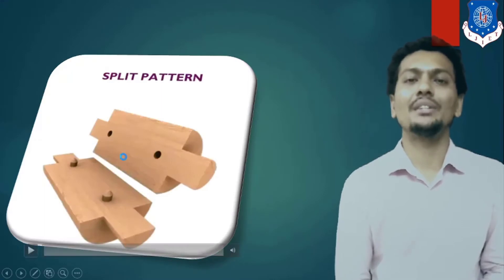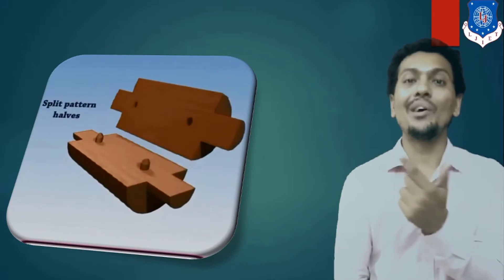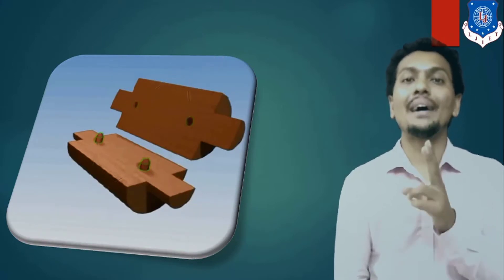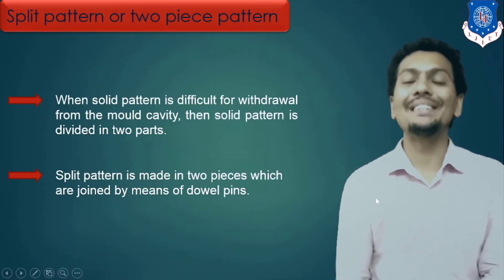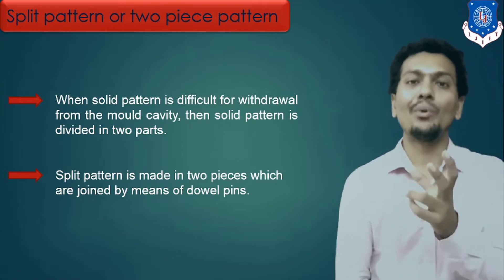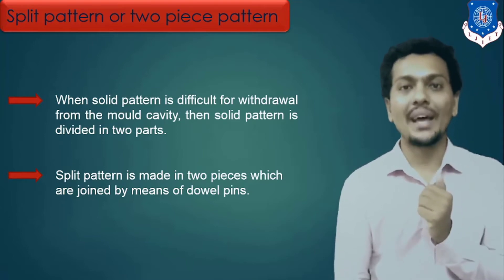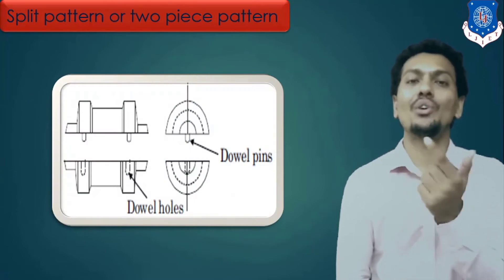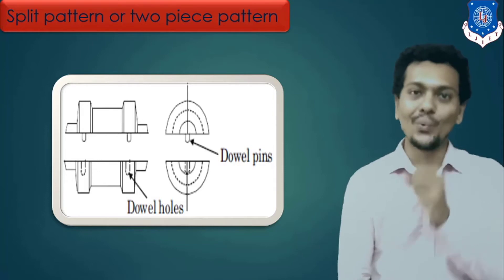After solid pattern, here I mentioned the split pattern. Split pattern is nothing but a pattern made of two parts or two halves. Any component that is made of two parts is known as a split pattern. With help of dowel pins, you can match the two parts or two halves of the pattern. So here are the important points regarding the split pattern: if you can divide a component into two parts, your pattern will be made in two parts, and it is known as a split pattern.